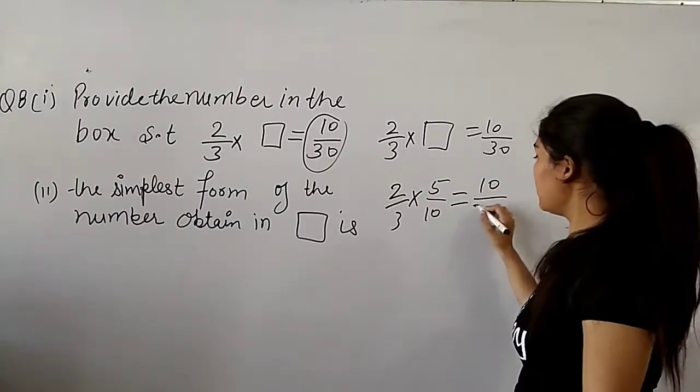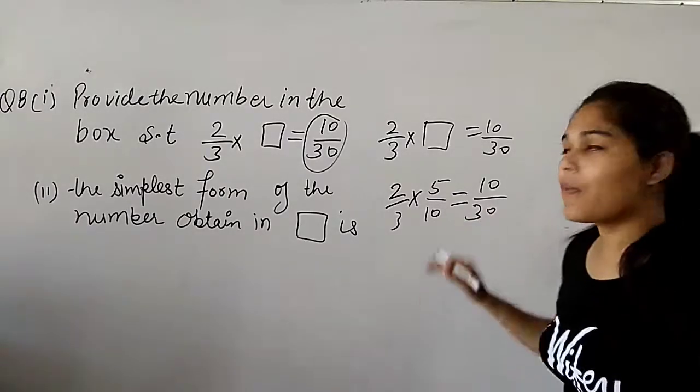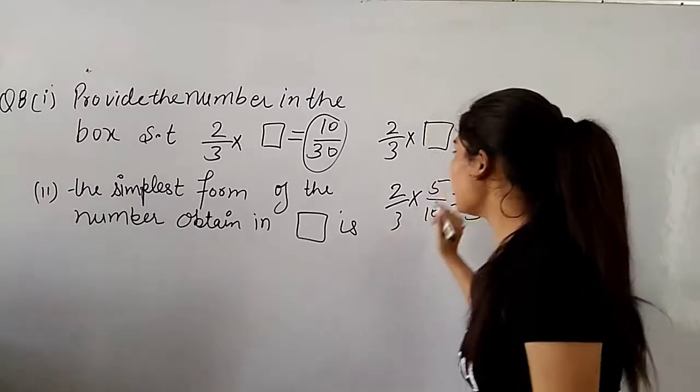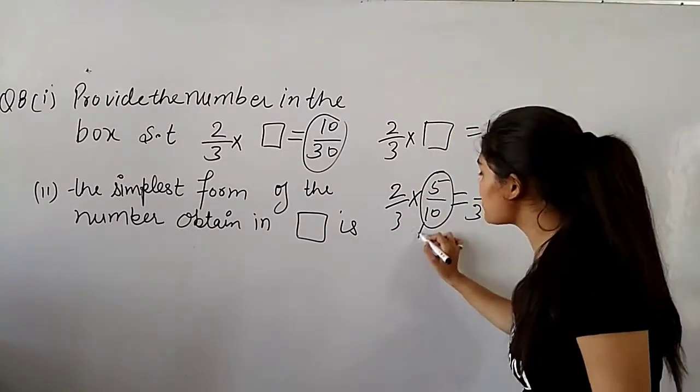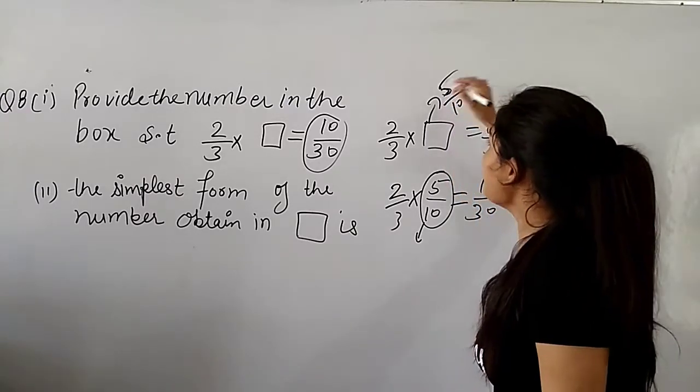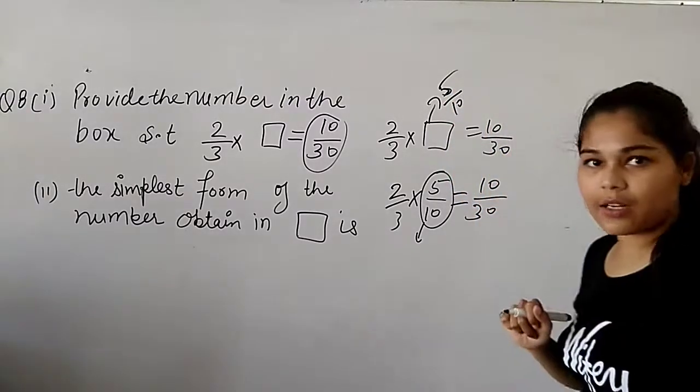So, 10 by 30. The answer is 10 by 30. Now, the value that we have to write in the box is 5 by 10.